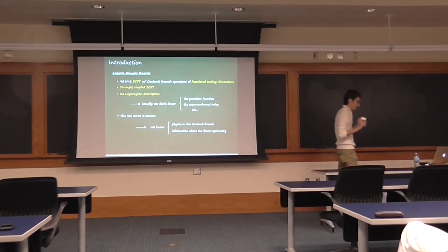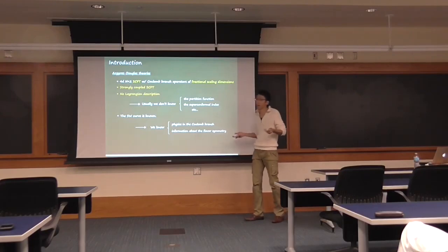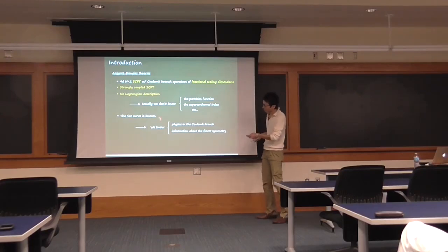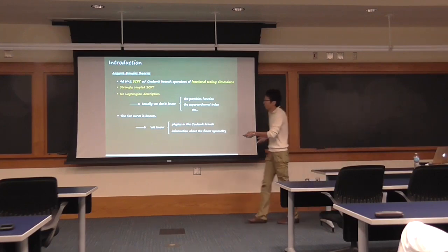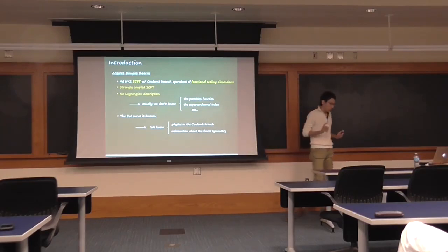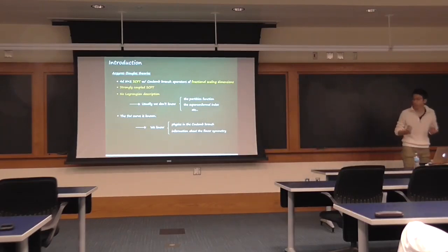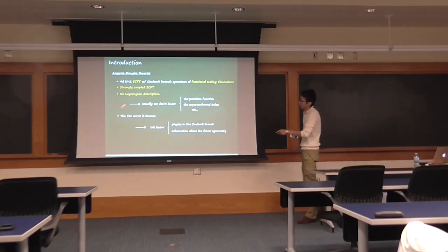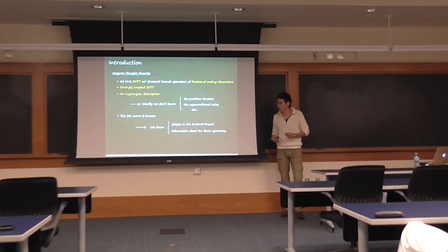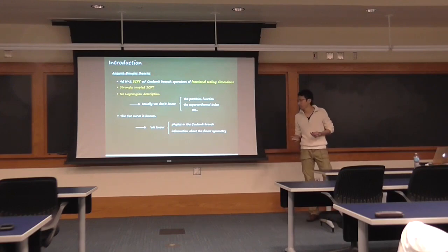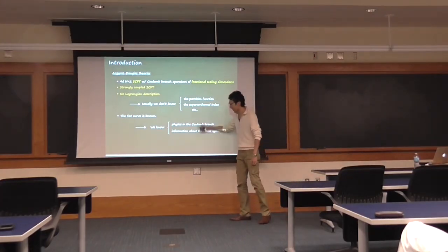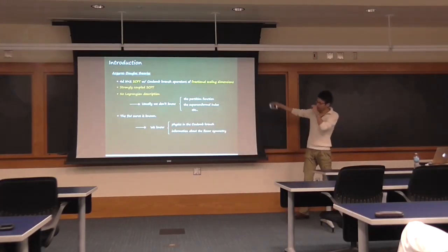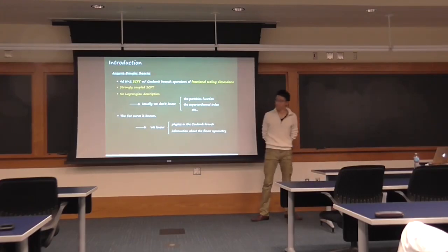Actually, we do know the Seiberg-Witten curve of this type of theory. This means that when you go to the Coulomb branch, you know everything in the IR, because the Seiberg-Witten curve characterizes all the IR physics in the Coulomb branch. You also know some information about the flavor symmetry because the Seiberg-Witten solution captures some properties of the flavor symmetry. So almost everything is unknown except for this. That's the Argyres-Douglas theory.